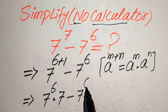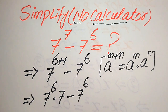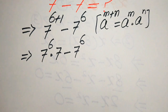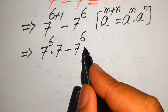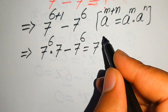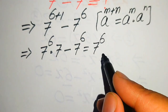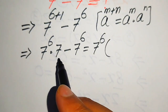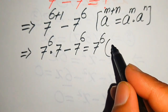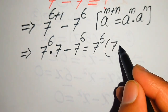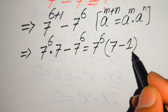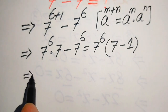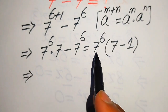Now you can see that both terms involve 7 to the power of 6, so we take 7 to the power of 6 as a common factor. The remaining values give us 7 to the power of 6 multiplied by the quantity (7 minus 1).